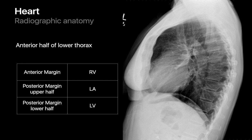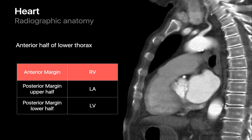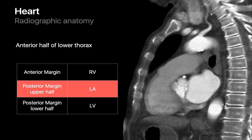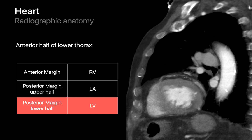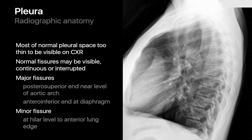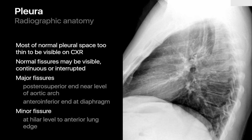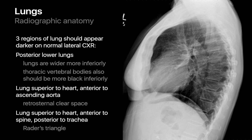The cardiac silhouette is visible in the anterior half of the lower chest. The anterior margin is formed by the right ventricle, the upper half of the posterior margin by the left atrium, and the lower half of the posterior margin by the left ventricle. The pleural space is too thin to see on a normal lateral chest radiograph, though major fissures are sometimes visible as very thin oblique lines and the minor fissure as a thin transverse line in the anterior mid-chest.